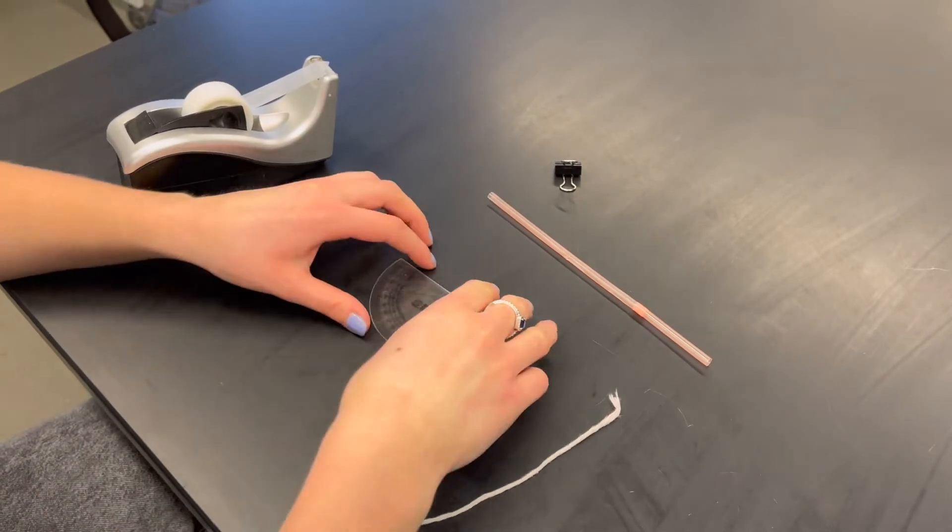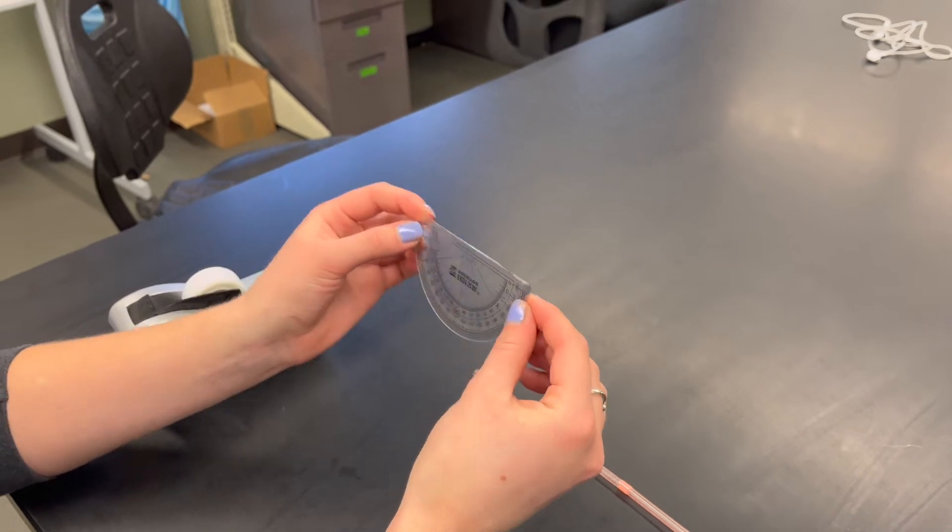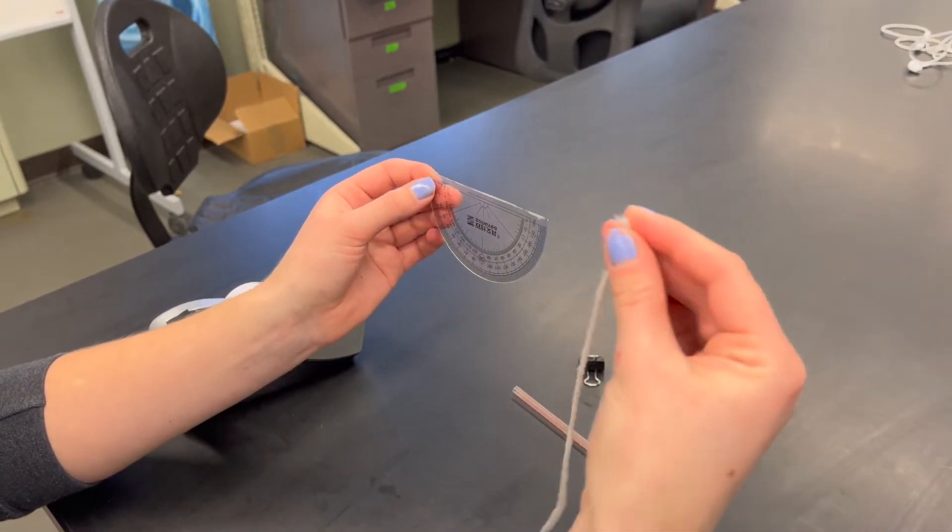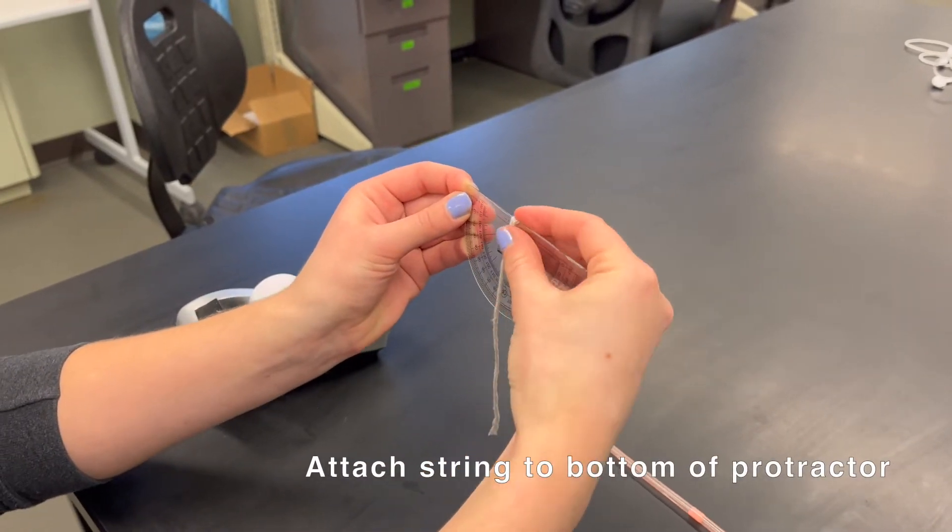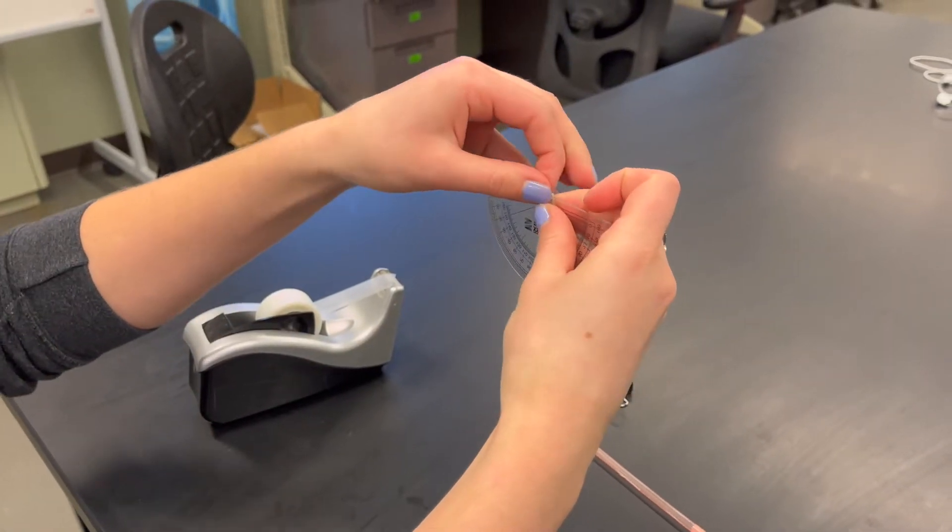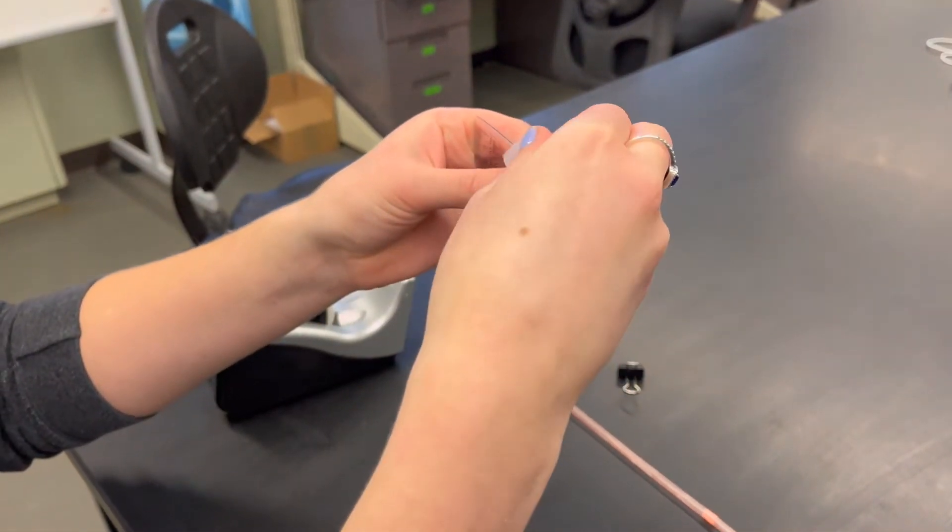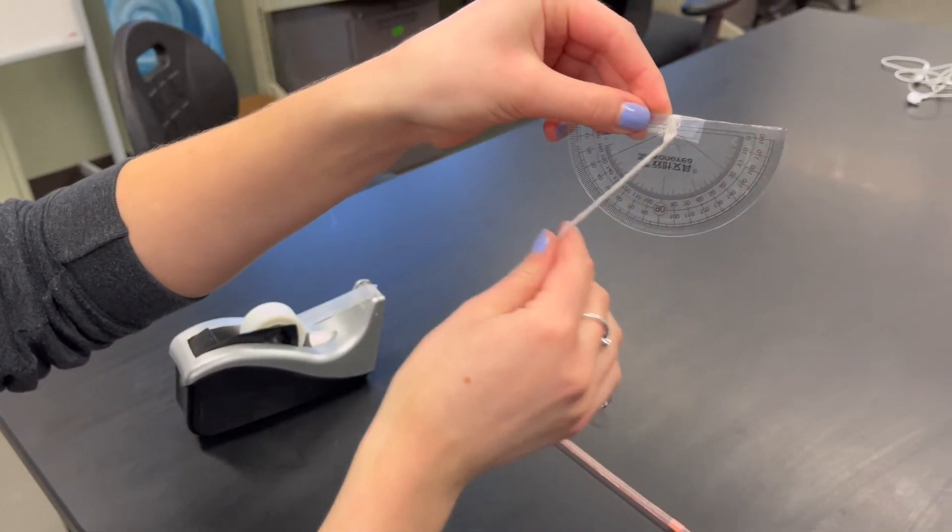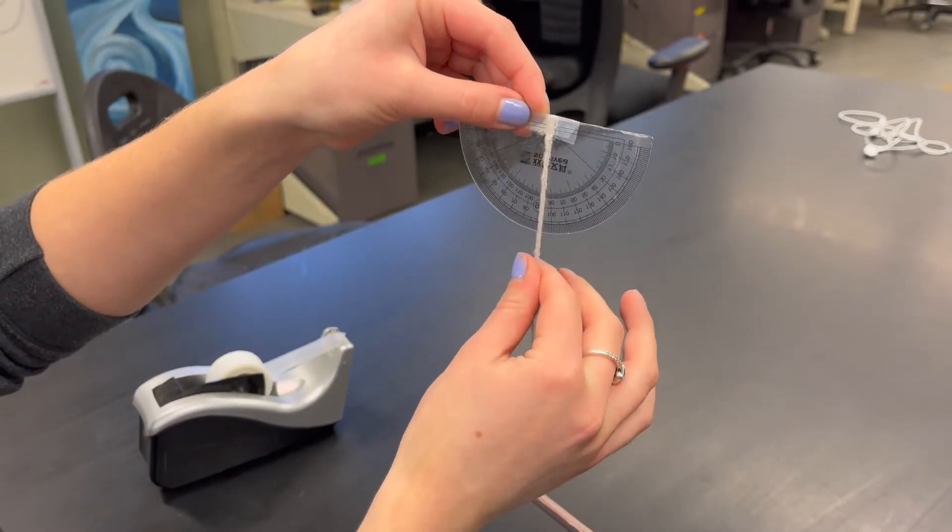So the first step that you want to do when you're building your clinometer is take your protractor and face it this way, so the bottom is facing up. You're going to want to take your piece of string and attach it to the bottom of the protractor like here, right along the ridge here with a piece of tape. So you're going to take the piece of tape like this and tape the string. And make sure the tape isn't restricting the movement of the string and it can swing freely and it's centered along the protractor.